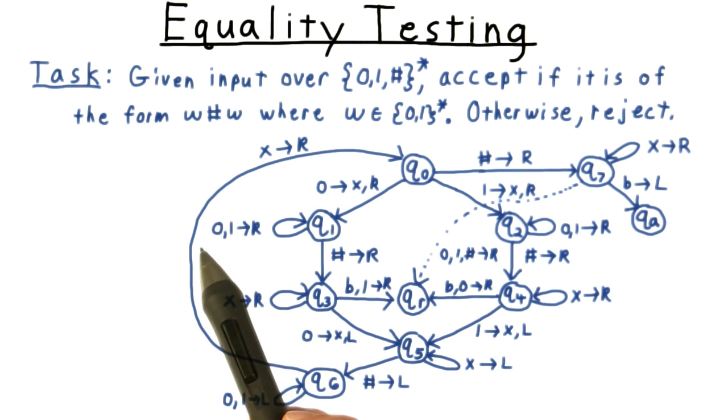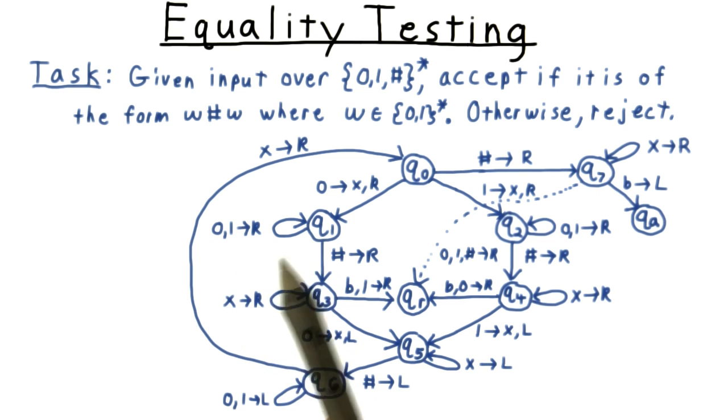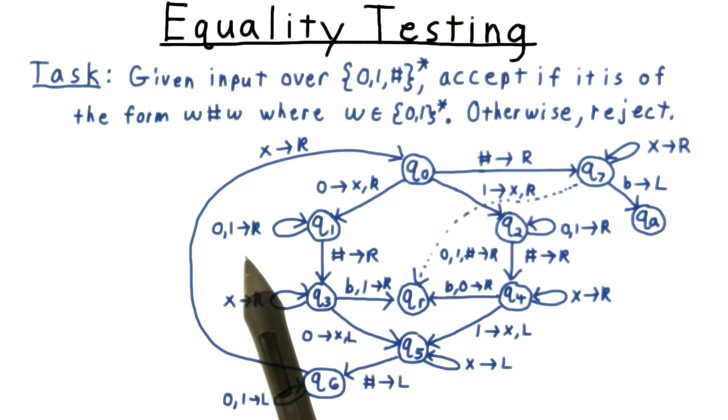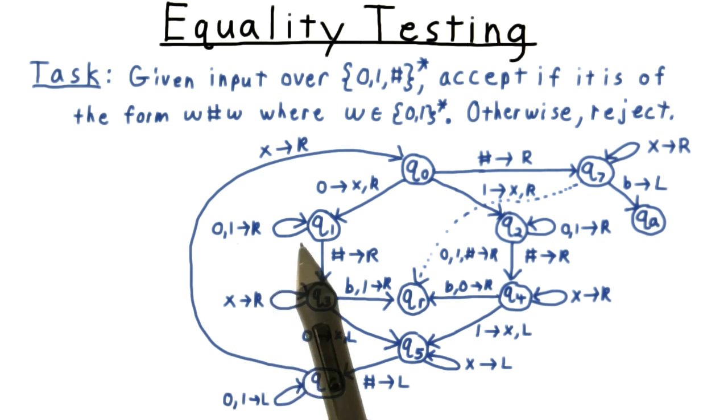When two symbols appear to the left of the arrow, I mean to match either one of those. It's easier than writing out a whole other edge. Also, sometimes I will only give a direction on the right. Interpret that to mean that the tape should be left alone.